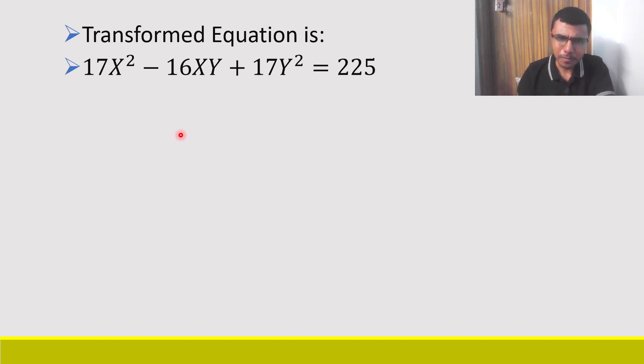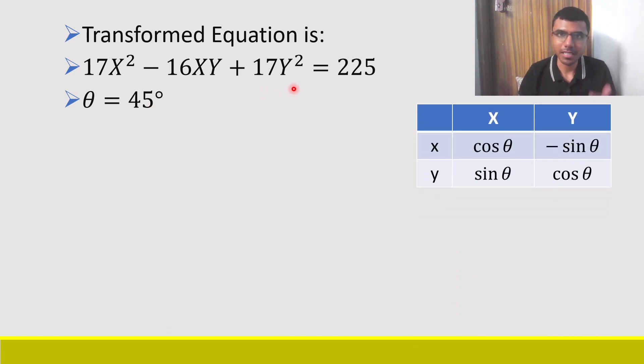Now here our angle of the axis are rotated by 45 degrees and this is the famous table. So we need to find out the original equation. Now how do we get the coordinates from this? Basically we have our equation in capital X and capital Y. Now I want to write this capital X and capital Y in terms of small x and small y. Now from this table how I'm going to do it. You need to see it like this in the downward direction.